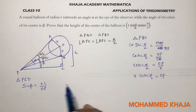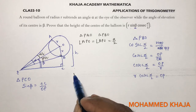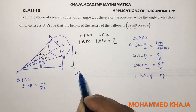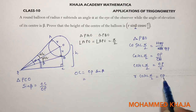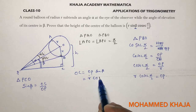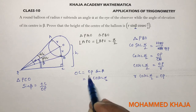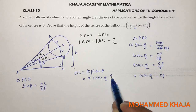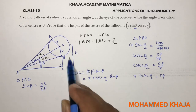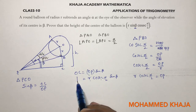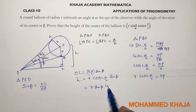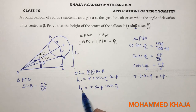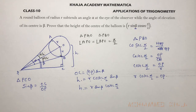Now substituting in place of OP: OC = OP·sin(beta). The value of OP is R·cosec(alpha/2), so substituting, OC = R·cosec(alpha/2)·sin(beta). And OC is nothing but the height of the center of the balloon. So the height of the balloon's center is R·cosec(alpha/2)·sin(beta).